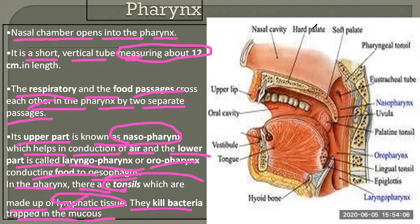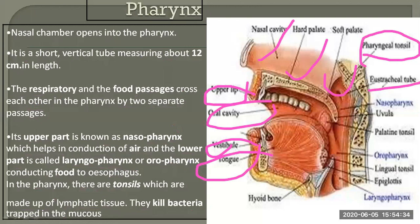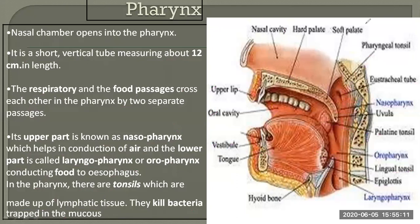In the pharynx there are tonsils made up of lymphatic tissue. These tonsils kill bacteria trapped in the mucus, preventing bacteria from entering the food or air passages. In this figure: the oral cavity, vestibule, tongue, nasal cavity, hard palate, soft palate, pharyngeal tonsils, Eustachian tube, nasopharynx (related to air passage), oropharynx (related to food passage), palatine tonsils, uvula, lingual tonsils, epiglottis, and laryngopharynx — which is located near the larynx.